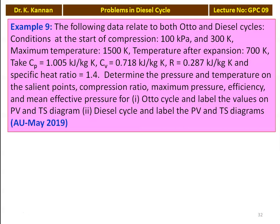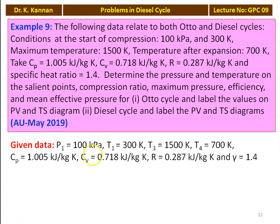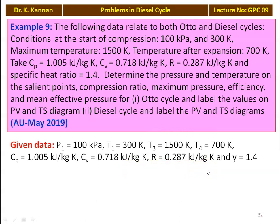There are two parts — solve for the Otto cycle and then for the Diesel cycle using the same common data, from the May 2019 Anna University question paper. Given data: P1 equals 100 kilo Pascal, T1 equals 300 Kelvin, T3 equals 1500 Kelvin (maximum temperature), T4 equals 700 Kelvin (temperature after expansion), Cp equals 1.005 kilojoules per kilogram Kelvin, Cv equals 0.718 kilojoules per kilogram Kelvin, R equals 0.287 kilojoules per kilogram Kelvin, and gamma equals 1.4.